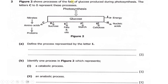Question two: Figure two shows processes of the fate of glucose produced during photosynthesis. The letters C to E represent these processes. We see photosynthesis producing glucose, which is then converted to amino acids with the addition of nitrates to become proteins, as well as to sucrose, fats and oils, starch, cellulose, energy, and nucleic acids. Part (a) says: define the process represented by letter I, where glucose is converted to energy.